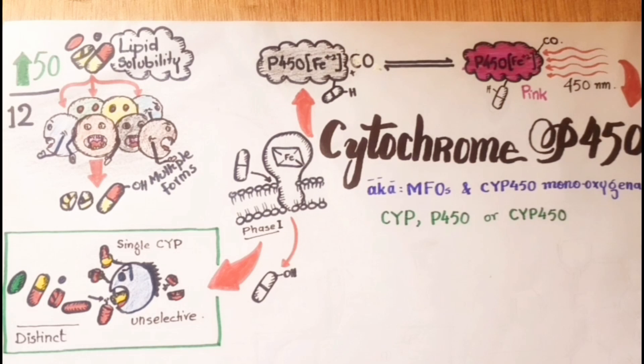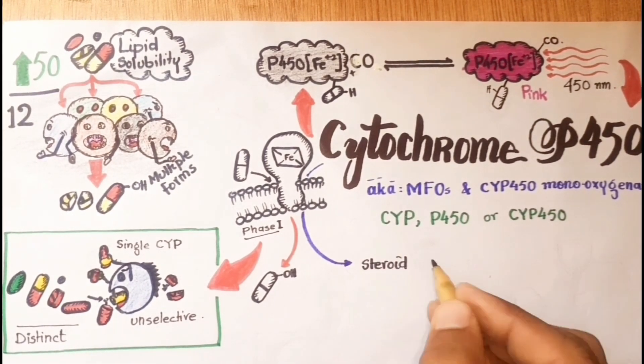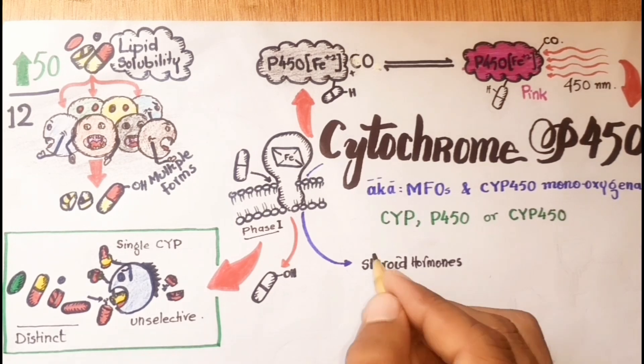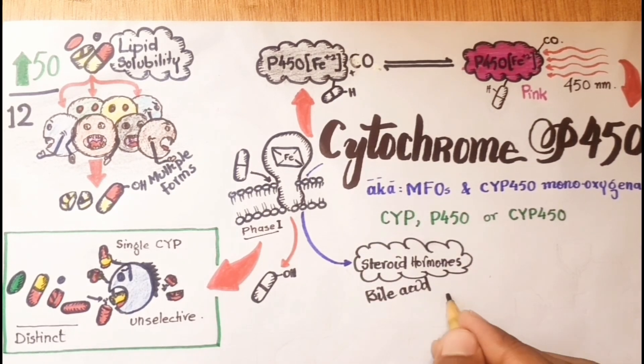These enzymes are also responsible for the anabolism and catabolism of a number of endogenous compounds, such as steroid hormones, bile acids, and prostaglandins.